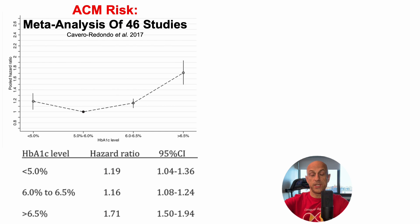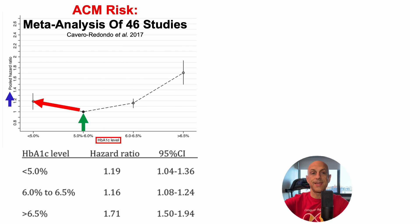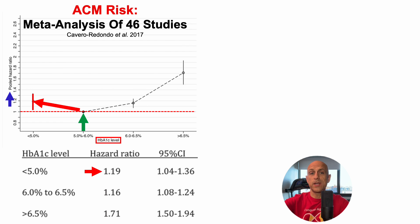In this meta-analysis of 46 studies, we've got the pooled hazard ratio — the risk of death from all causes — on the y-axis, plotted against the circulating HbA1c level on the x-axis. When 5 to 6% for HbA1c was defined as the referent, people who had HbA1c lower than 5% had a significantly increased all-cause mortality risk, with a 90% increased risk. The confidence interval is completely above 1, at 1.04 to 1.36.